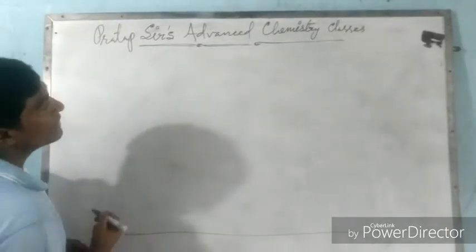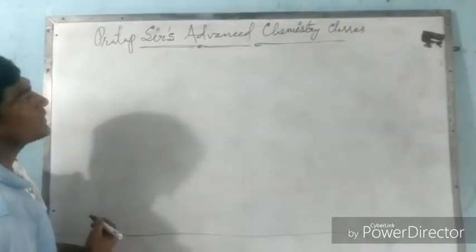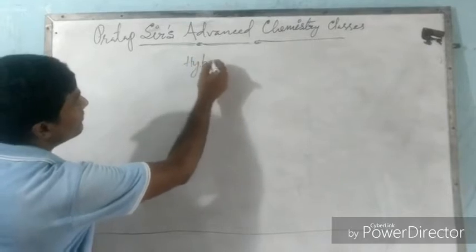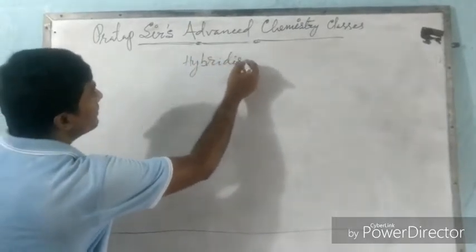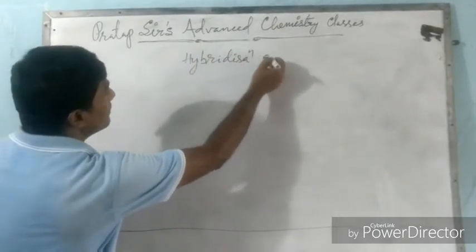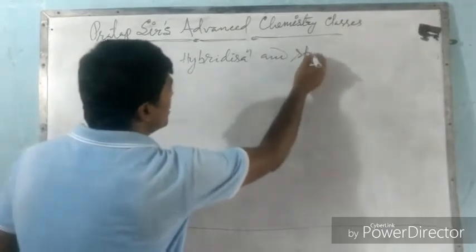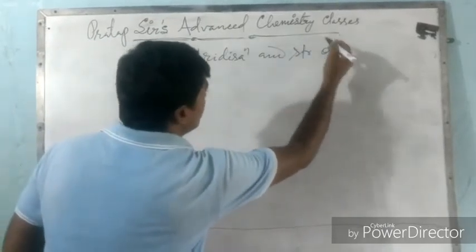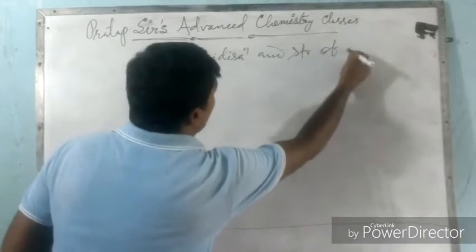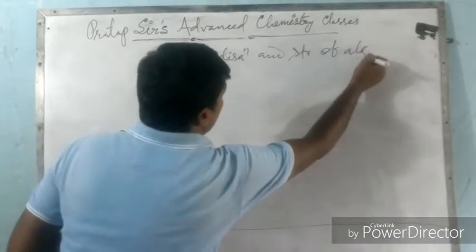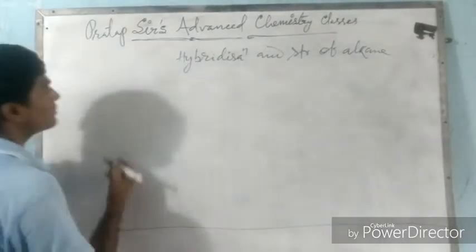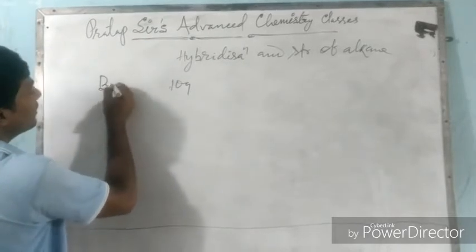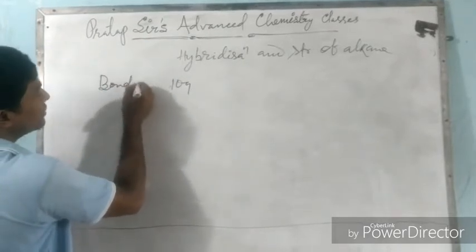This is Pratap Shah. Today we will discuss about hybridization and structure of alkanes. We will see the structure of alkanes through hybridization and accordingly see how the bond angle is 109 degrees 28 minutes.